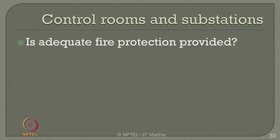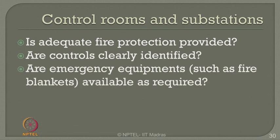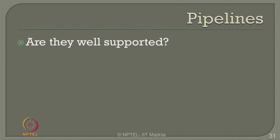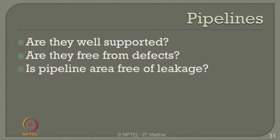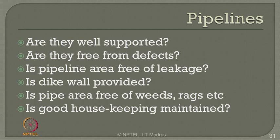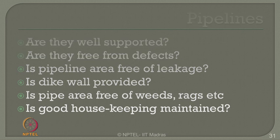Let us also check control rooms and substations. Are they adequate with fire protection devices? Are controls clearly identified? Is emergency equipment such as fire blankets available as required by rules and regulations? Is building pressurization working properly where required? Check pipelines — are they well supported, free from defects, and free from leakage? Is a dike wall provided around pipeline or pipe racks? Is the pipe area free of weeds and debris? This is important because weeds around pipe circumference can cause corrosion on the external surface without being noticed. Good housekeeping prevents many of these issues.